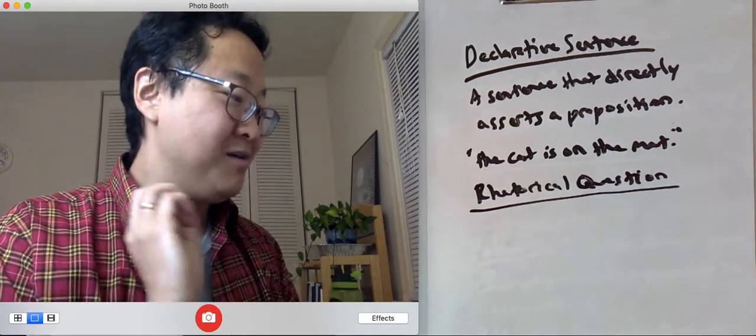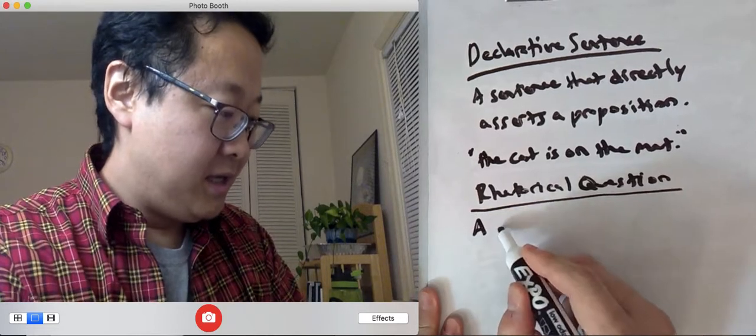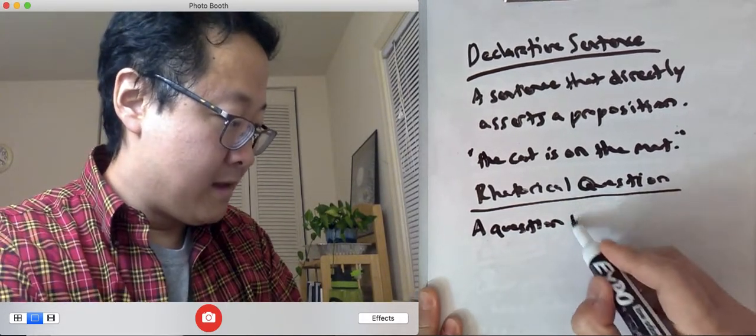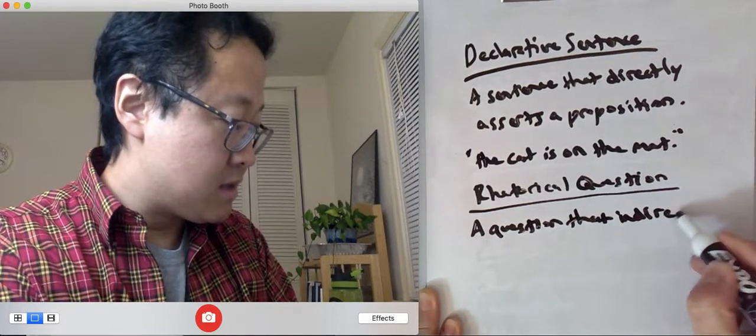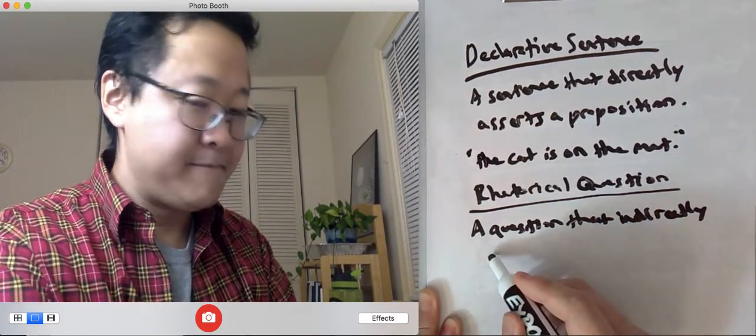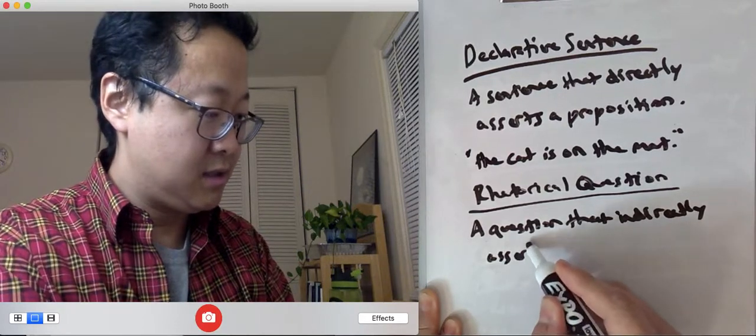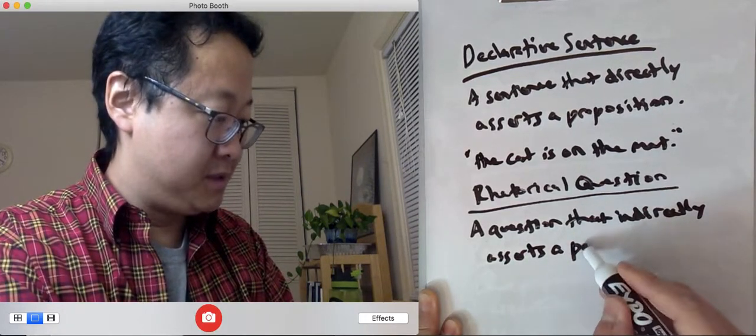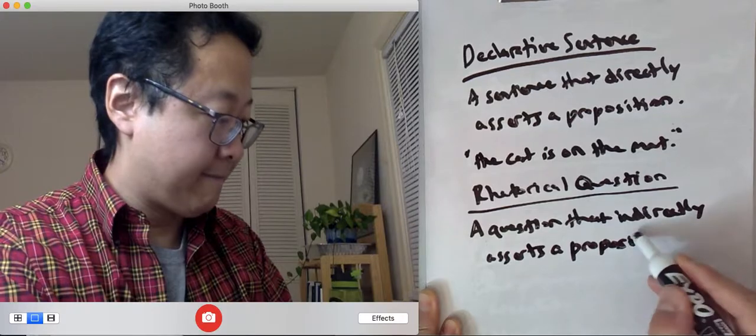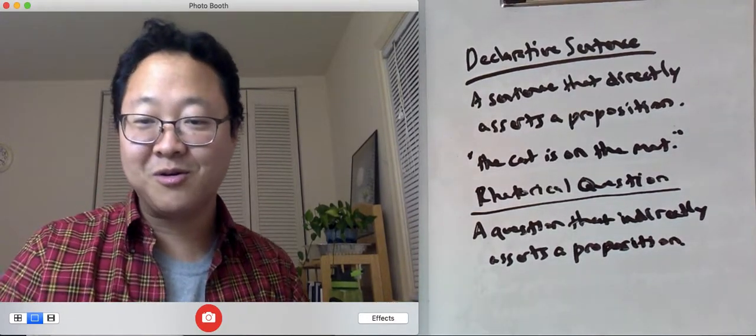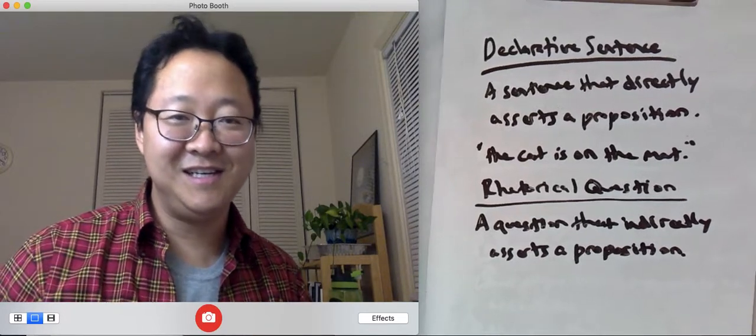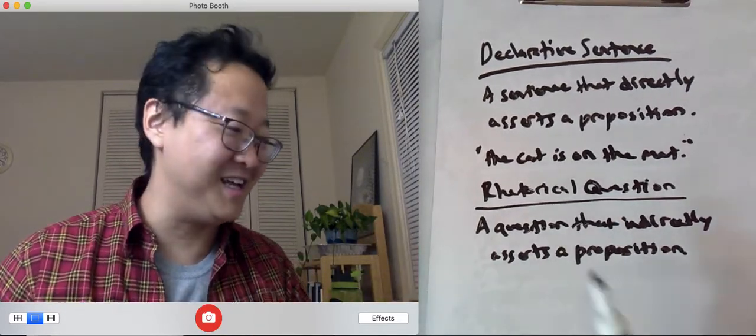Now, a rhetorical question is a question that indirectly asserts a proposition. So the point about a rhetorical question is it's not directly stating something like 'the cat is on the mat.'